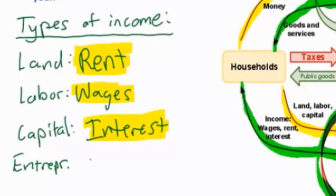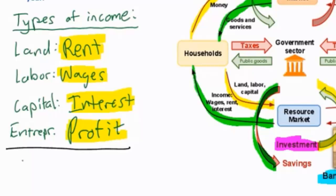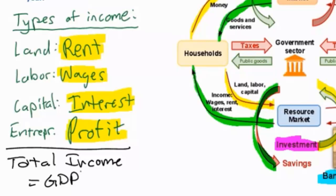That leaves us with entrepreneurship. Some households are entrepreneurs — the business owners who seek profits by starting a business enterprise. If a household starts his or her own business, they are ultimately seeking profits. Therefore, the income earned by households who start their own business is known as profit. If we take the total rents, wages, interest payments, and profits earned by households, we get the total income of the nation, which when summed together gives us the GDP — the gross domestic product. The income approach measures total rent, wages, interest, and profits earned in the resource market in a year.